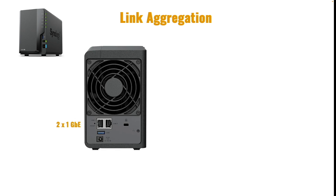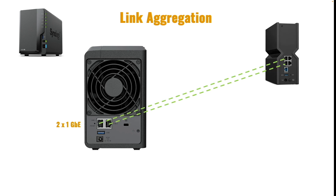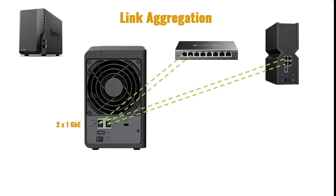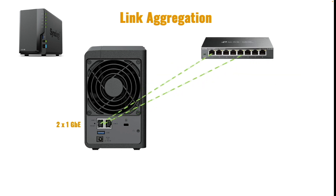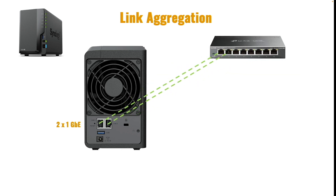To clarify what link aggregation does, I'll use my Synology DS224 Plus as an example. It has two 1Gb LAN ports that can both be connected to a router with multiple LAN ports or a switch. Additionally, if you have a managed switch that supports link aggregation, you can utilize different link aggregation modes.